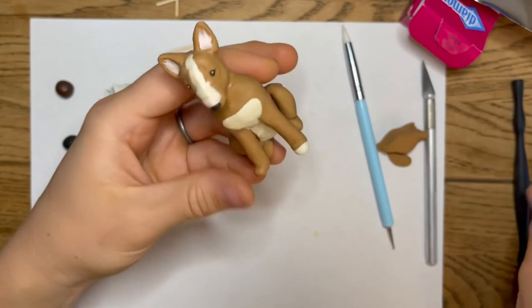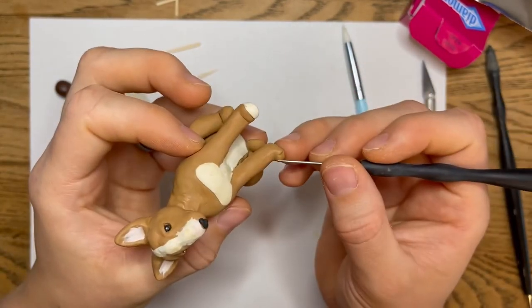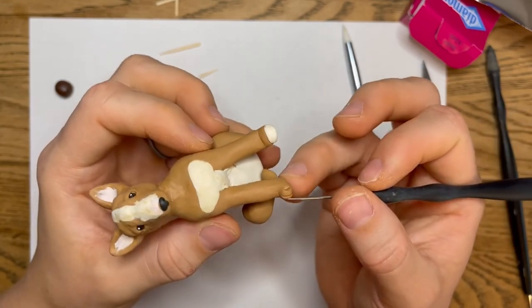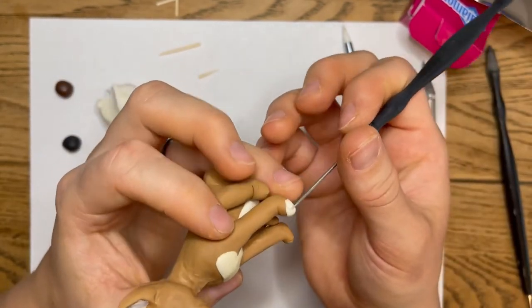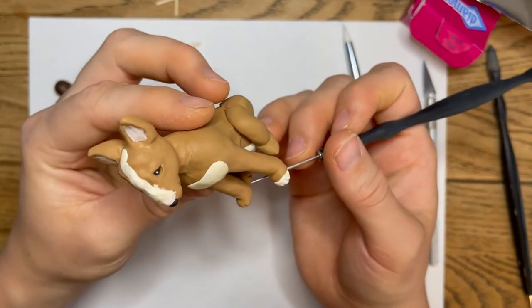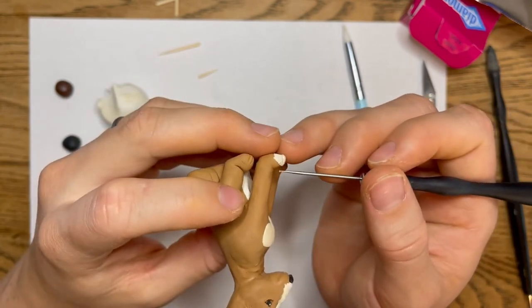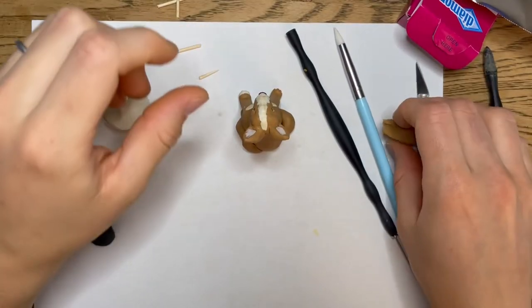And for the paws, take your potter's needle and press the lines - three lines on each paw. Pressing, pressing. And then back here, one, two, three. One, two, three. If a hair gets on there, just flick it off.